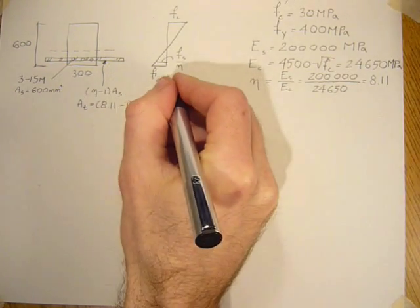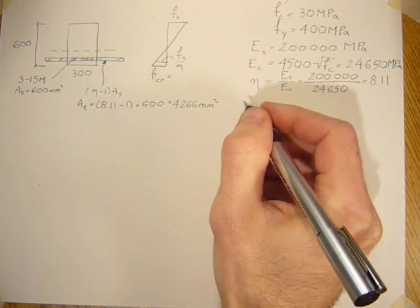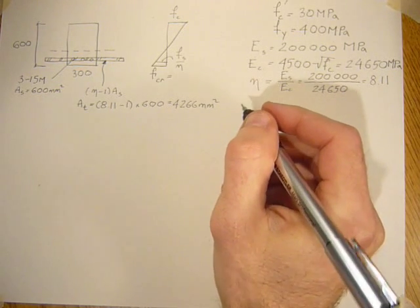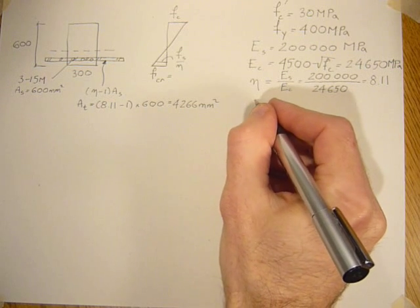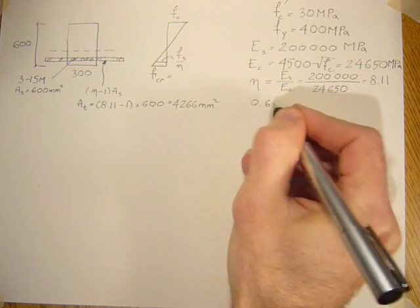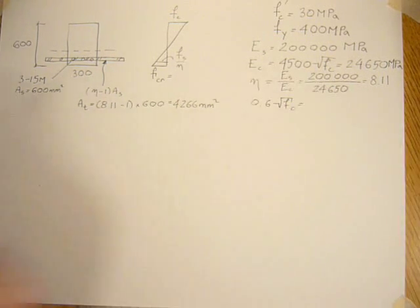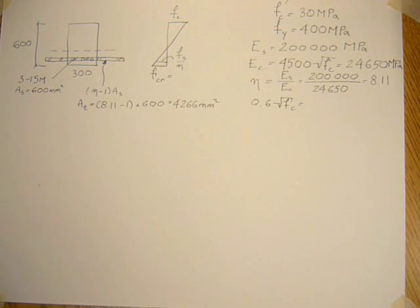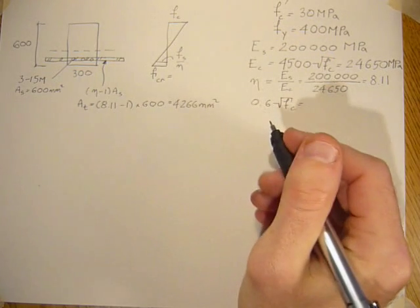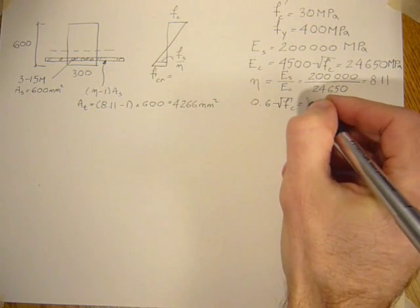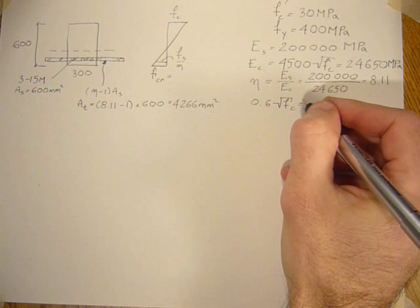The cracking moment is the maximum tensile stress that concrete can take. And that limit is 0.6 times the square root of F'C. So 0.6 times the square root of 30, and that's about 3.29 MPa.